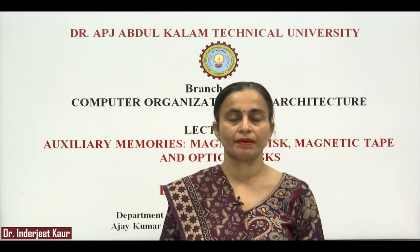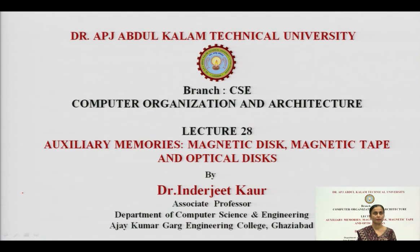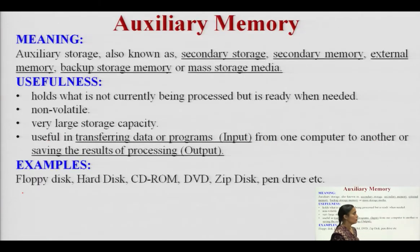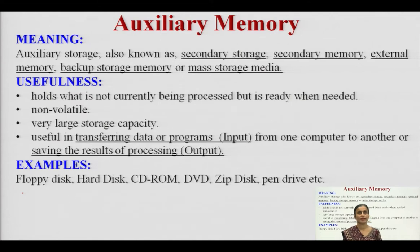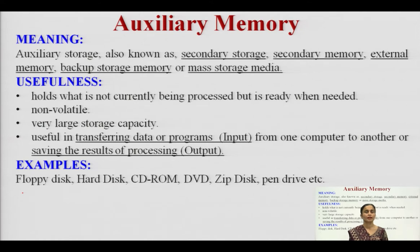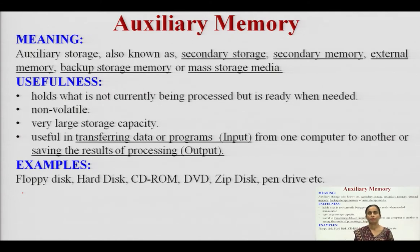Auxiliary memories are also called secondary memory, used to store large amounts of data. Auxiliary memory is also known as secondary storage, secondary memory, or external memory — externally connected to the CPU. It is used for taking and storing backups, and is defined as backup storage memory or mass storage media.